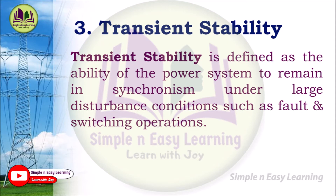Once the stability is disturbed, after the large disturbance, the system comes back to its normal value. Whether the system returns to the normal level after a large disturbance is what we call transient stability — the system remaining in synchronism, coming back to a stable state again after the large disturbance.